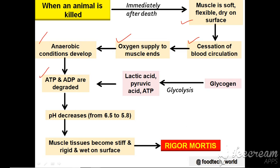Glycogen is an energy source stored in the animal body. When glycogen undergoes glycolysis it produces lactic acid, pyruvic acid, and ATP. When glycogen is diminished, ATP starts diminishing and acids like lactic acid and pyruvic acid accumulate in the body. This accumulation of acids lowers the pH. Initially the pH of meat was 6.5, but after acid production the pH becomes 5.8, which makes the muscle more stiff and rigid and wet on the surface — this is the rigor mortis process.